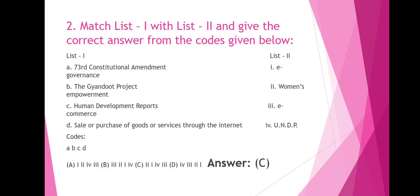Match list one with list two and give the correct answer from the codes given below. 73rd Constitutional Amendment — Women's Empowerment; The Jamtooth Project — E-Governance; Human Development Reports — UNDP; Sale or Purchase of Goods or Services through the Internet.